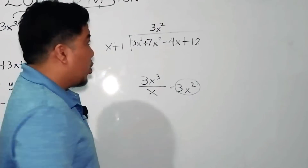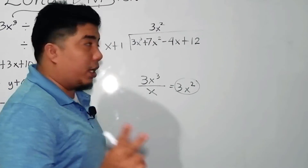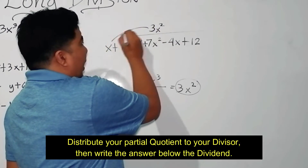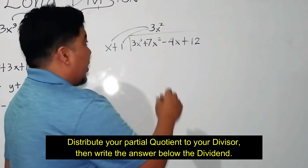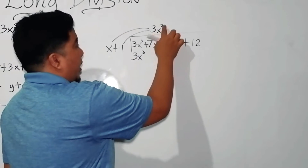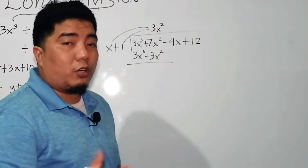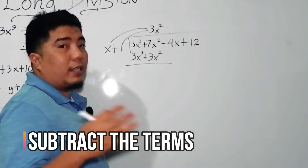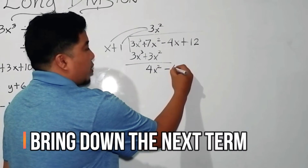Now, why is 3x squared placed on the second position, not the first? It's because we are dealing with two terms here, so you start with the second term. After getting this, you multiply 3x squared by your divisor using distributive property. 3x squared times x is 3x cubed; 3x squared times 1 is positive 3x squared. Then, same as elementary long division, you subtract. 3 minus 3 is 0, giving 4x squared. Bring down the next term, which is negative 4x.